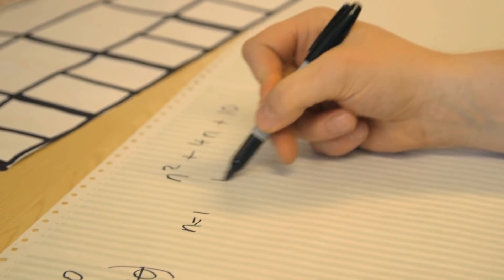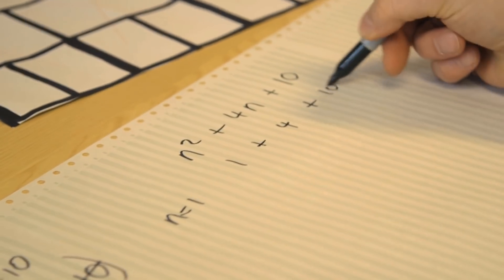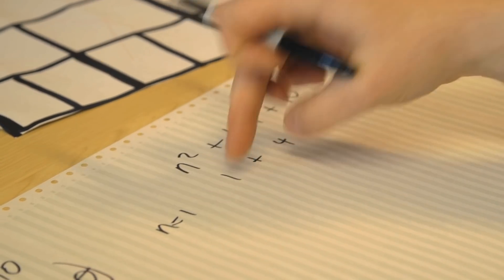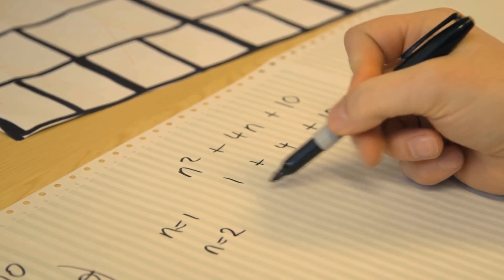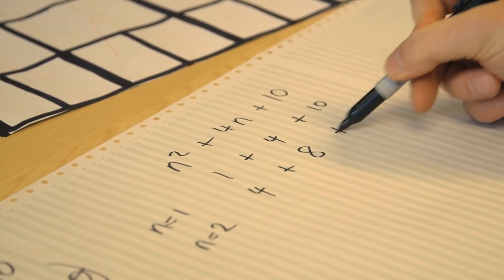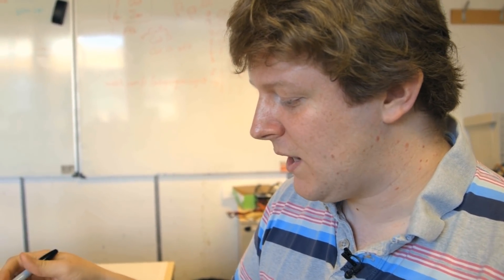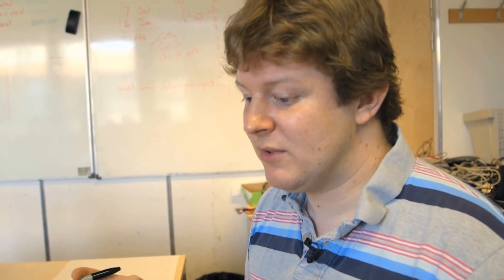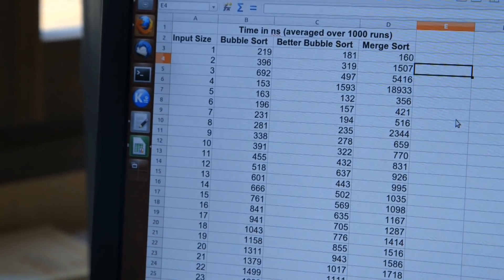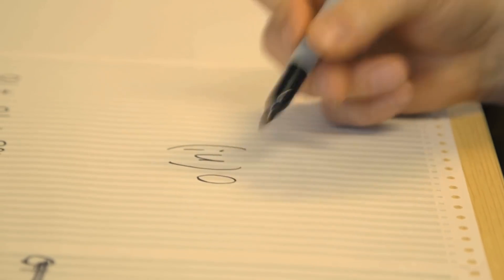The reason you drop lower-order terms is that as N increases, the N² term always dominates. If N is 1: N² is 1, 4N is 4, the constant 10 is actually biggest. If N is 2: N² is 4, 4N is 8. If N is 10: N² is 100, 4N is 40. As N gets bigger, the N² term takes precedence. With big O we only care about the highest-order term. When merge sort was slower than bubble sort at small N, that's likely due to constant-factor overhead in the more complex algorithm.